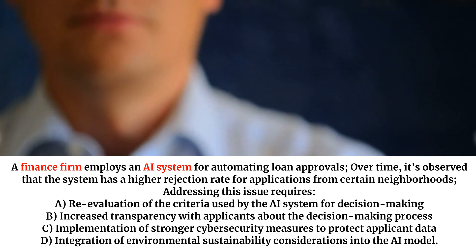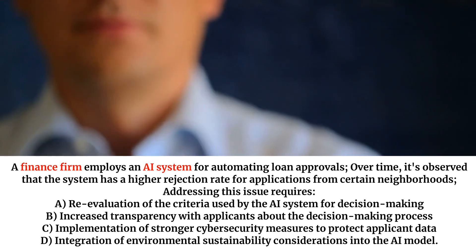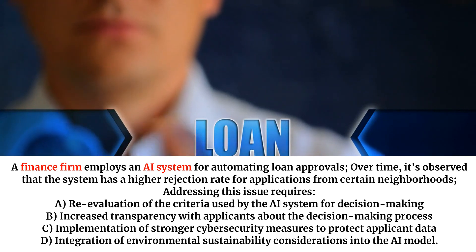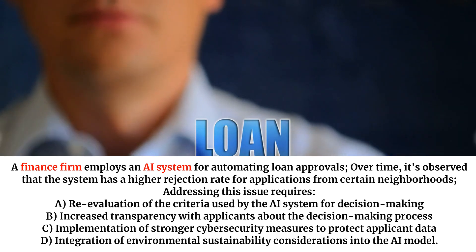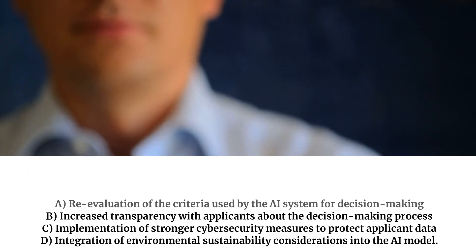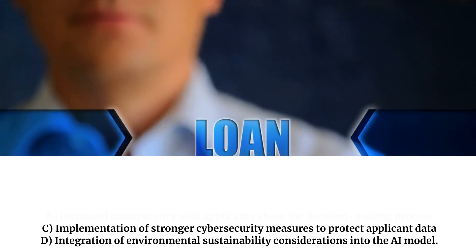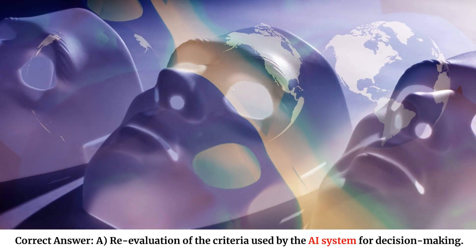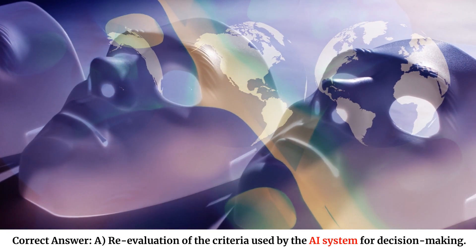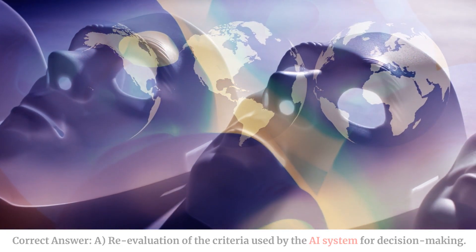Addressing this issue requires: A. Re-evaluation of the criteria used by the AI system for decision-making. B. Increased transparency with applicants about the decision-making process. C. Implementation of stronger cybersecurity measures to protect applicant data. D. Integration of environmental sustainability considerations into the AI model. Correct answer: A — Re-evaluation of the criteria used by the AI system for decision-making.